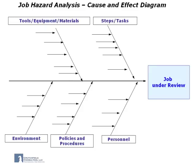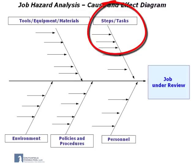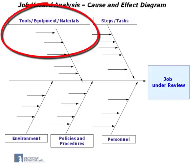We like to use the following sequence. The first rib of the fishbone will be the tasks and steps. In sequence, you would define each step or task in the order required to do the job. Next, we will develop a rib that consists of all the tools, equipment, and materials required to complete this task or step.